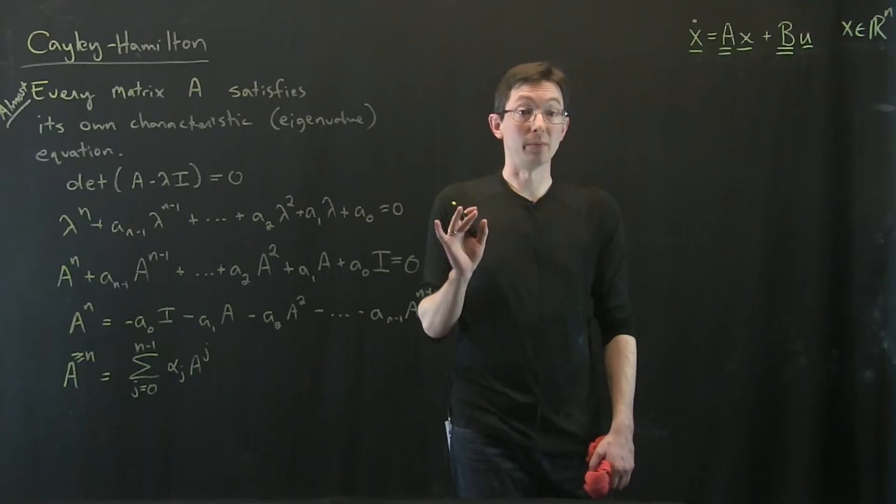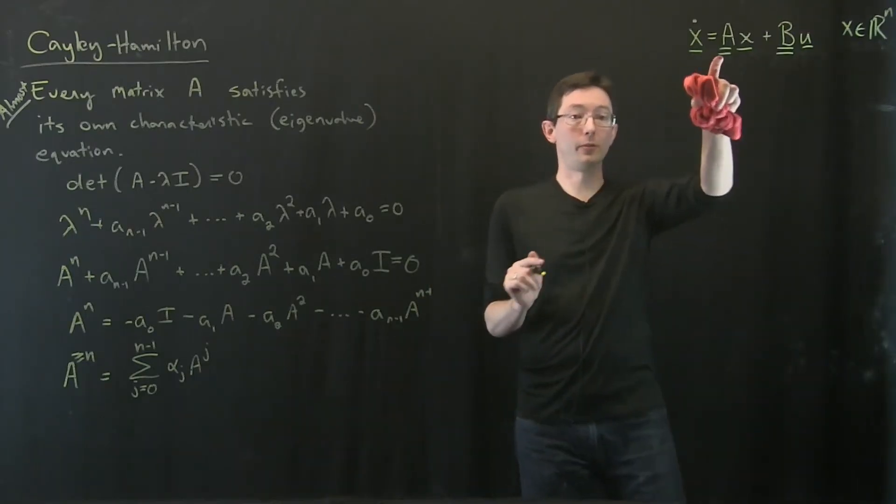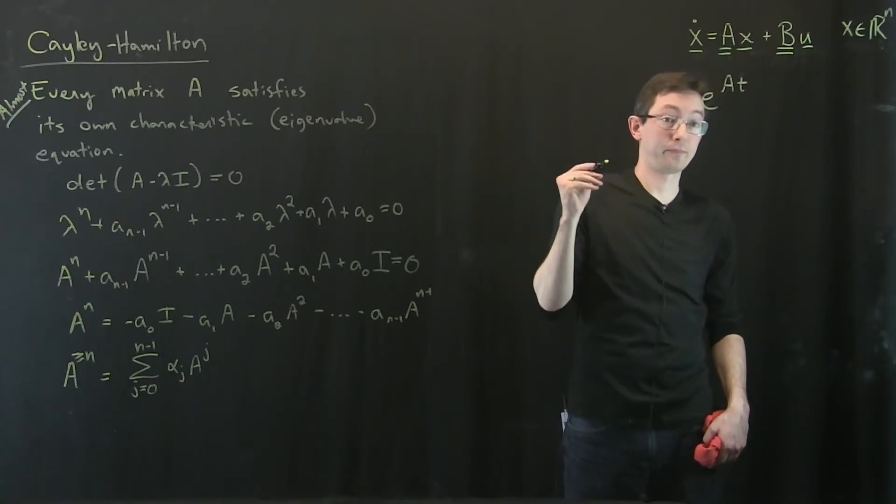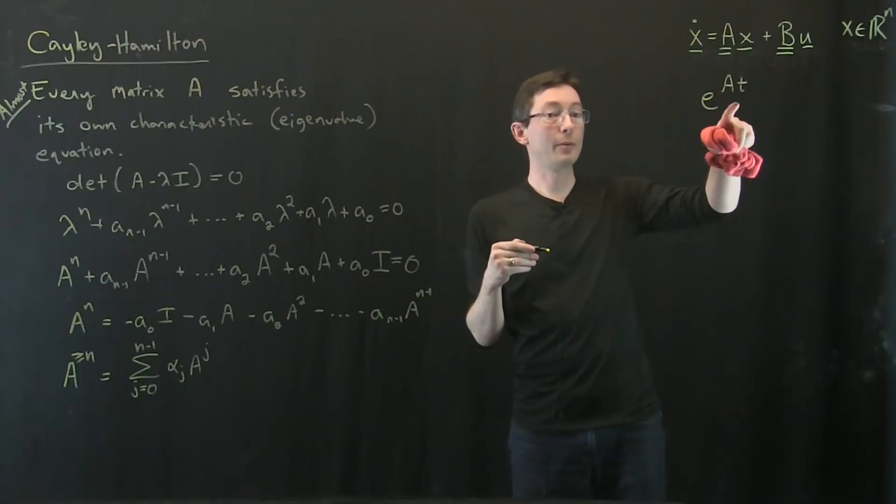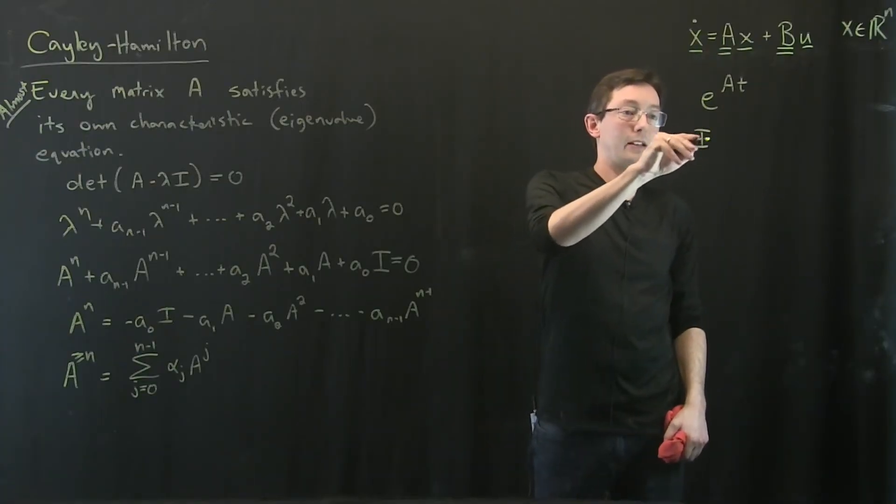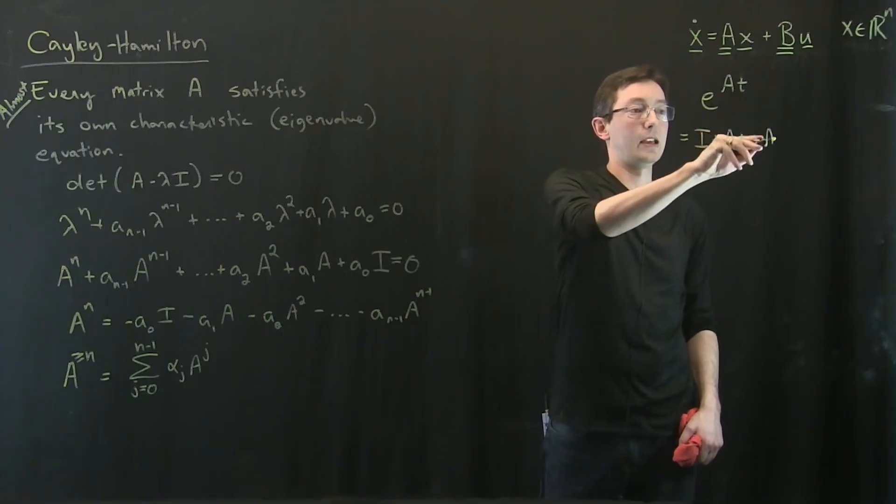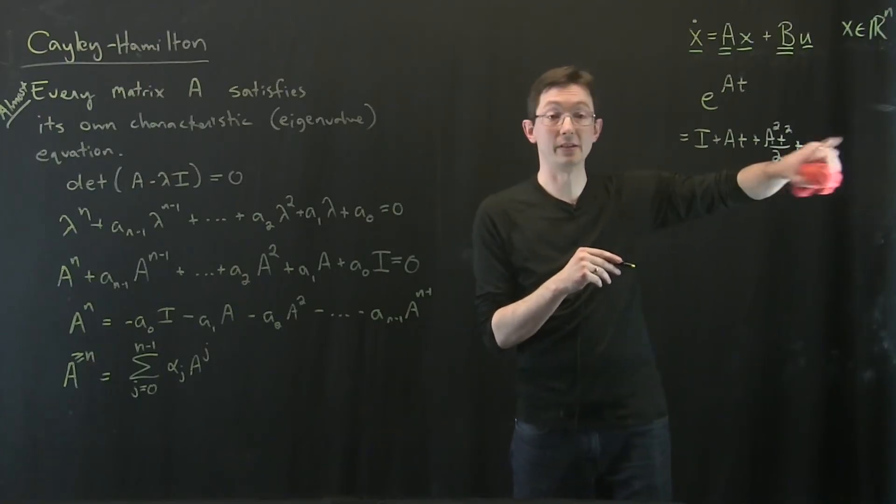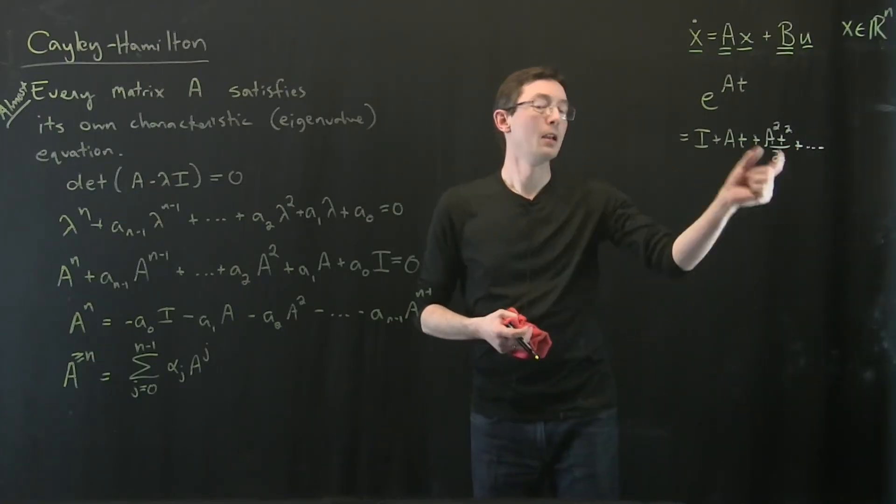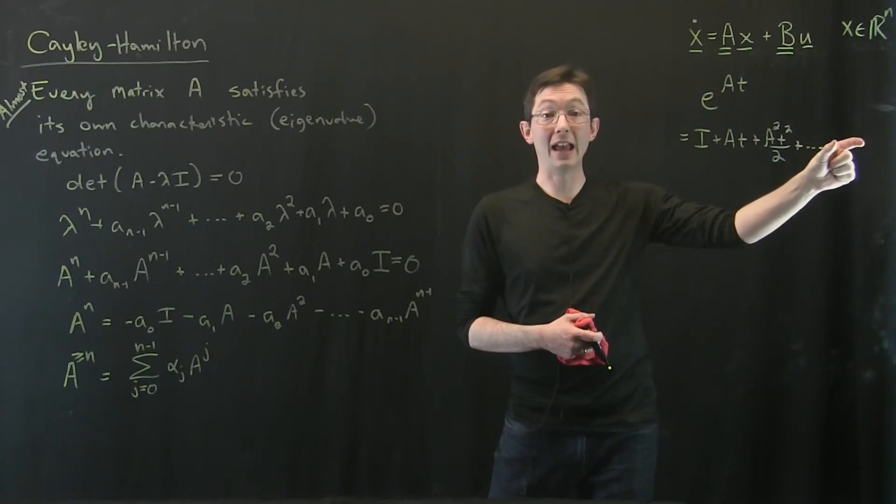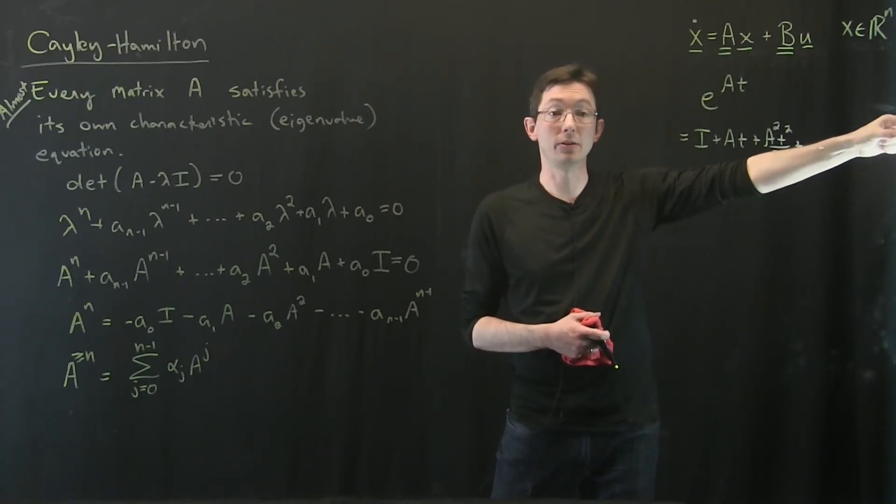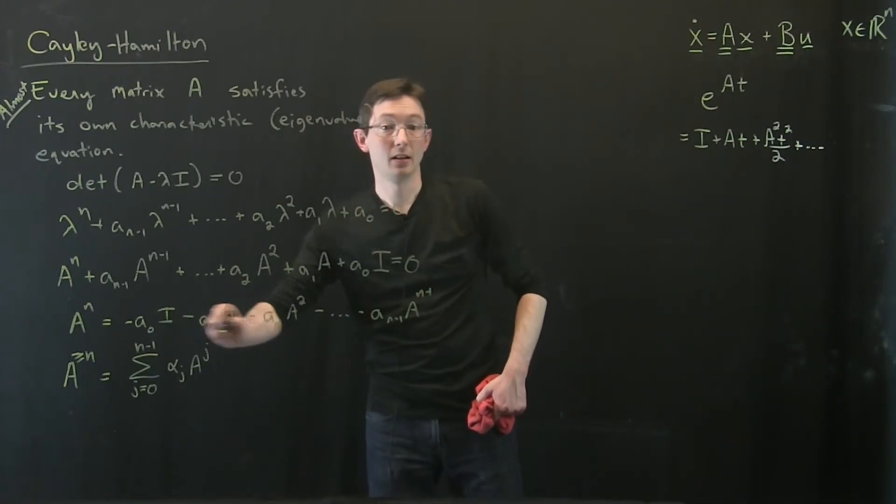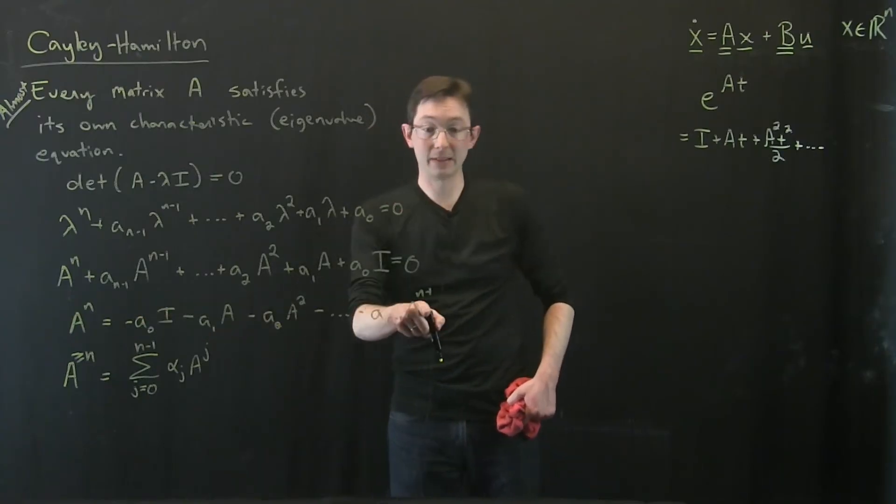This is really remarkable because what this allows you to do is take the solution. Remember the solution of X dot equals A X is E to the A T times X naught. And remember E to the A T equaled identity plus A T plus A squared T squared over 2 plus dot dot dot forever. This went on forever. There's infinitely many terms here. But what's really remarkable is after the A to the n and A to the n plus 1 and A to the n plus 2 terms, I can write those as an honest to goodness sum of the first terms up to A to the n minus 1.